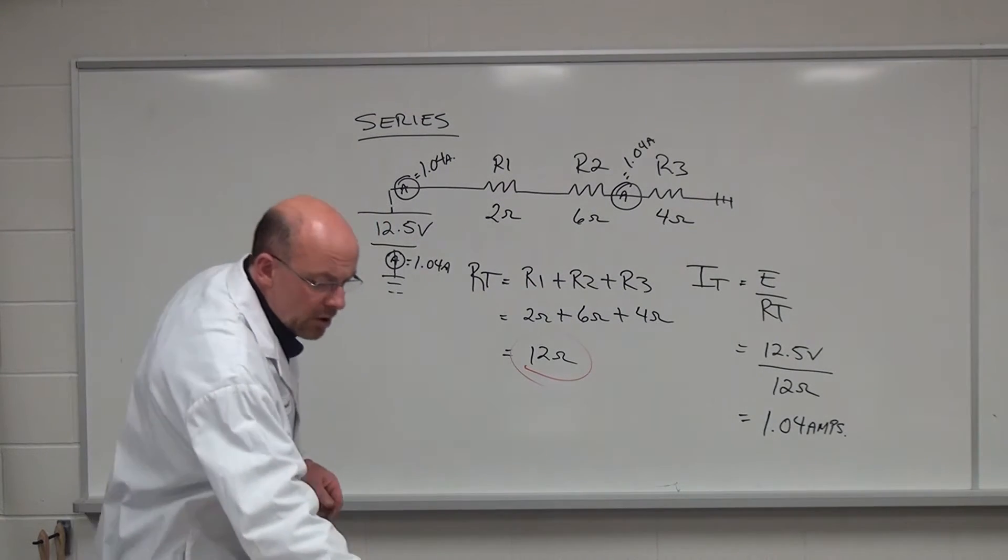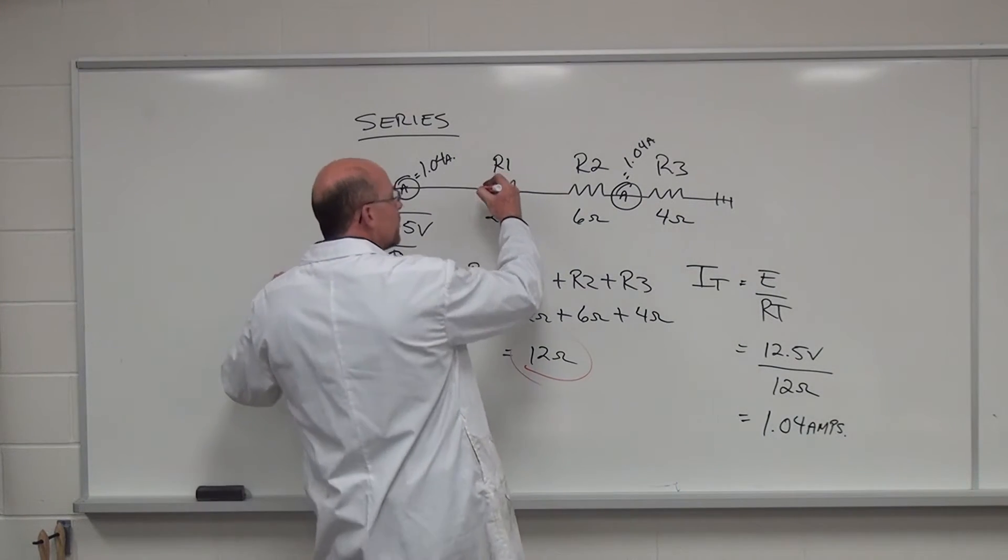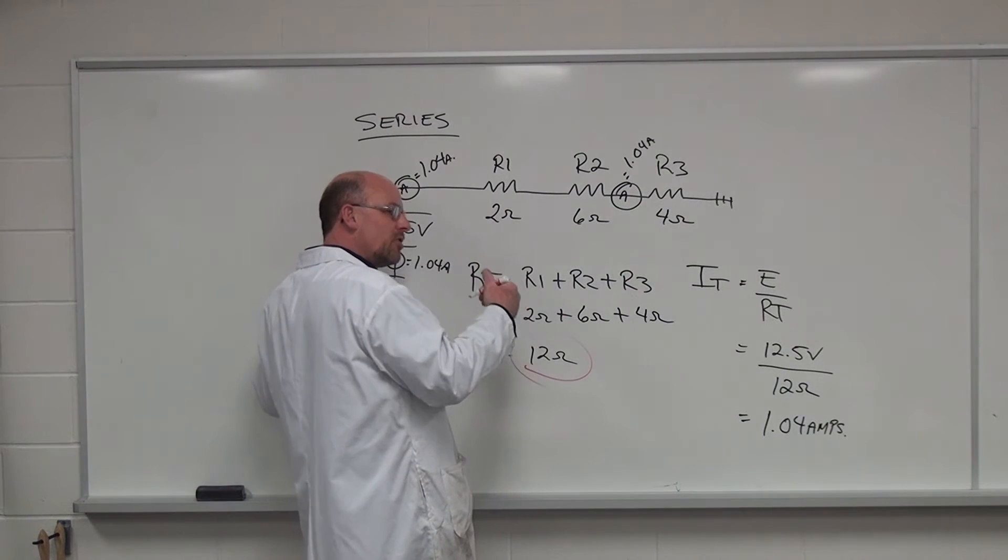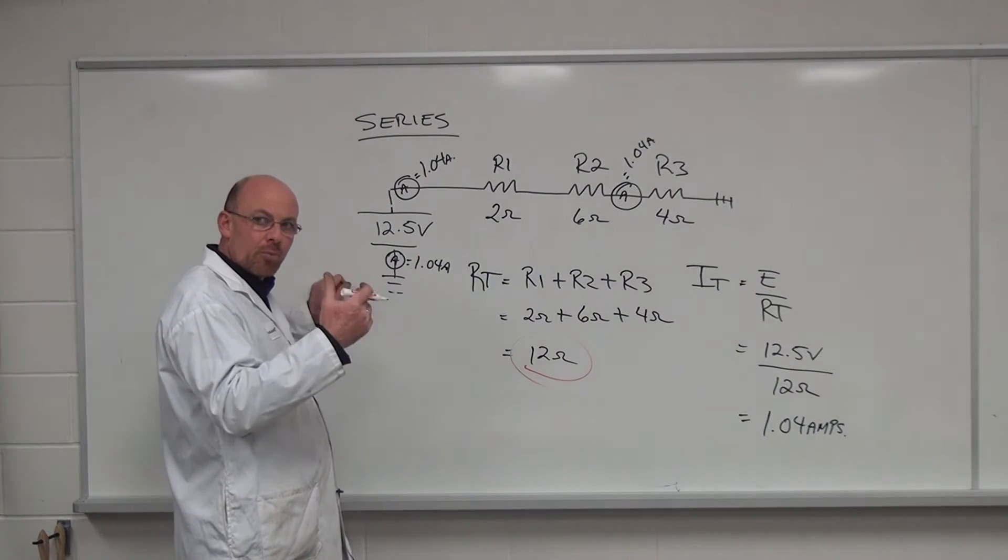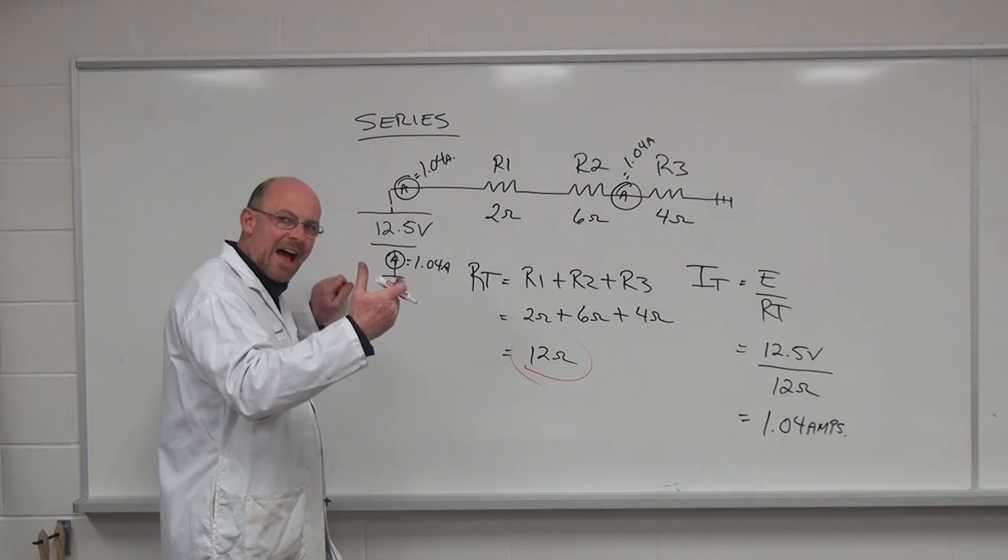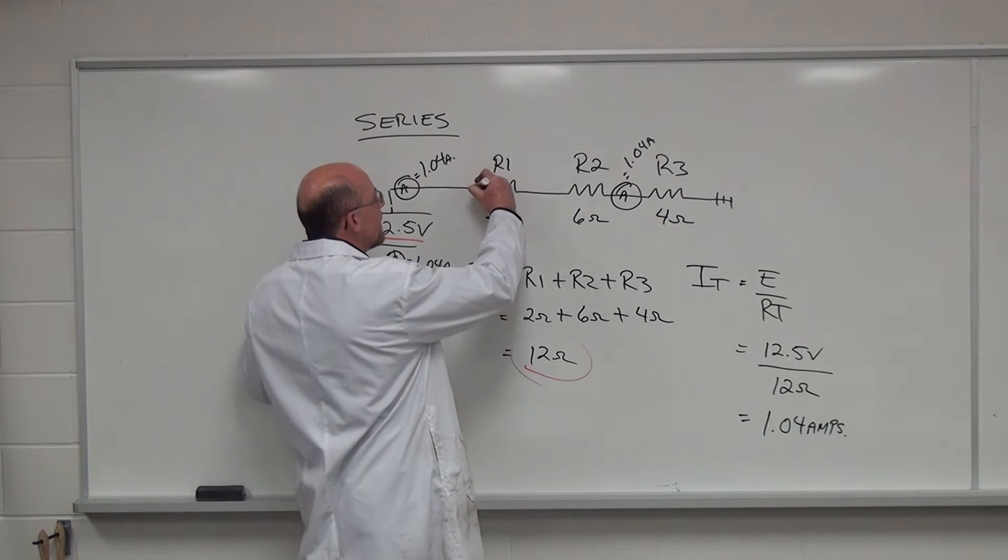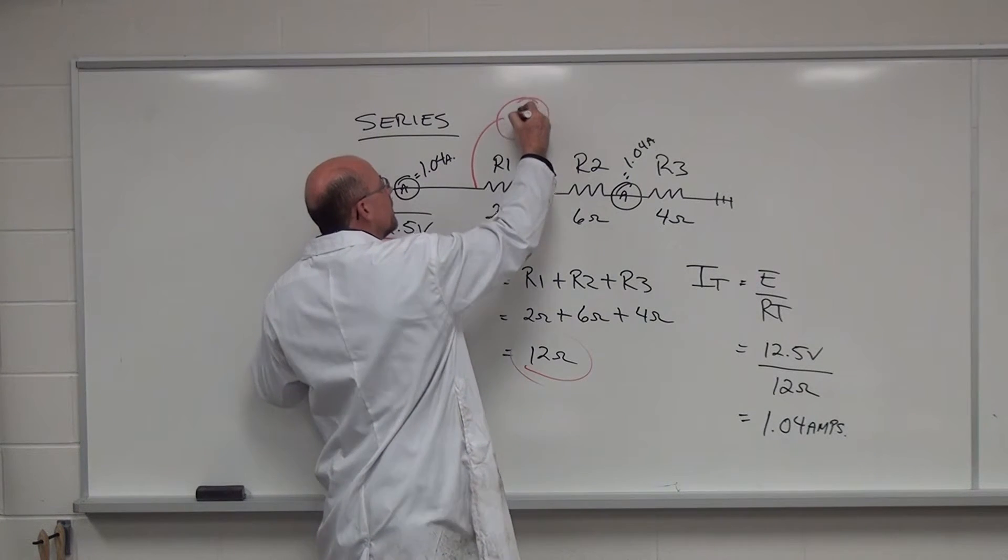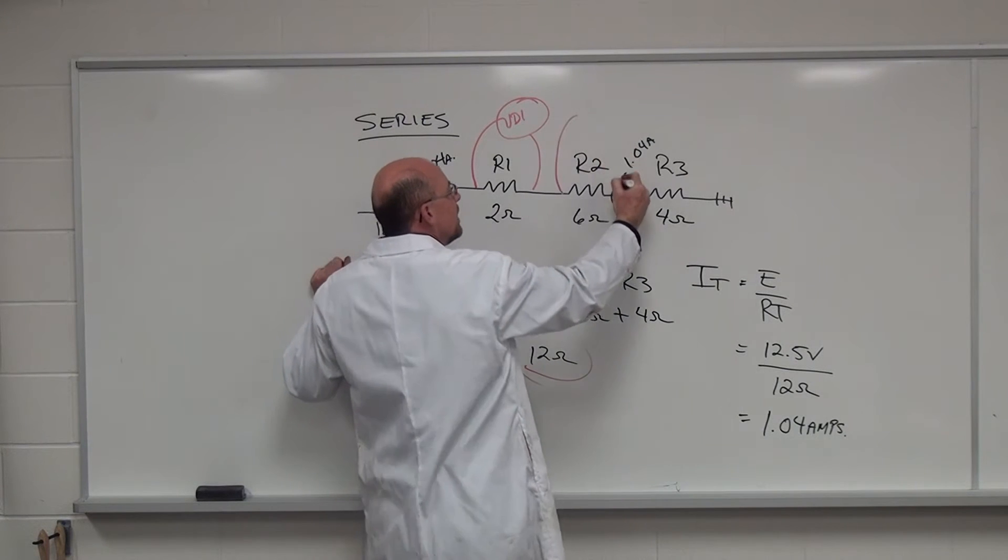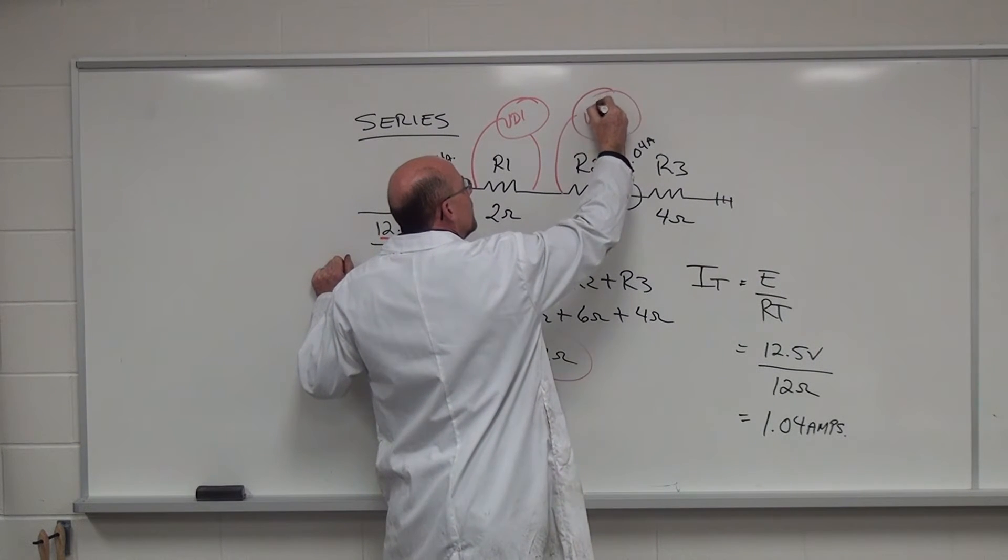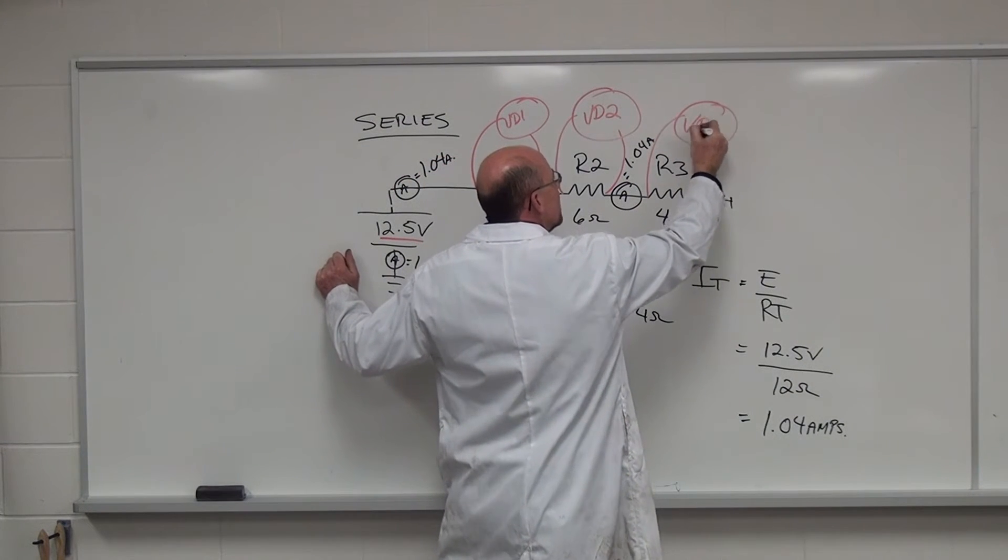So next thing we have to take a look at is the voltage drops in the circuit. So I'm just going to place how you would actually put the meter leads into a series circuit to determine do we have the appropriate voltage drop and does it add up until we end up with the source voltage. So if I was to make my connection with a meter, this would be VD1. This would be VD2. And this would be VD3.